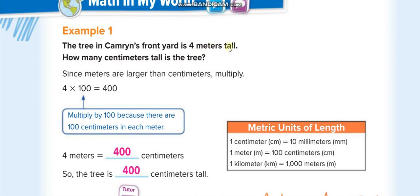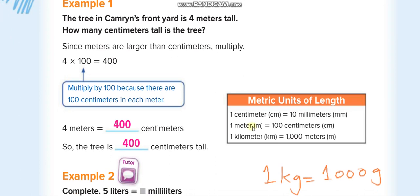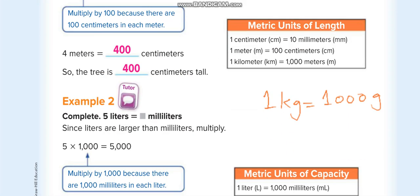First example: the tree in Cameron's front yard is four meters tall — how many centimeters is that? You have to memorize this table. One meter is equal to one hundred centimeters, so four meters equals four times one hundred, which is four hundred centimeters.